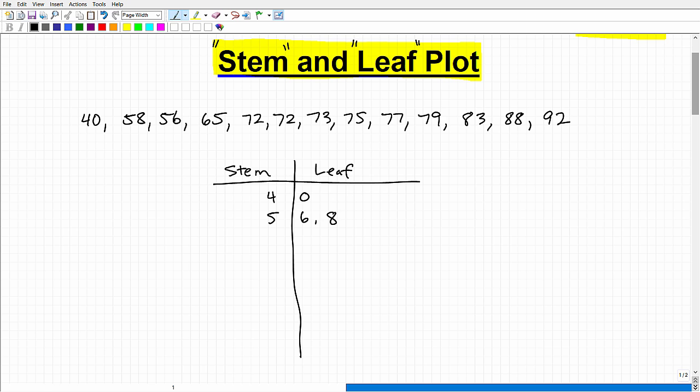I have 65. I have 72. I have another 72. I have a 73. I have a 75. I have a 77. And I have a 79. Okay. So now you have an 83 and an 88, and then a 92. Okay. This is our Stem and Leaf Plot.